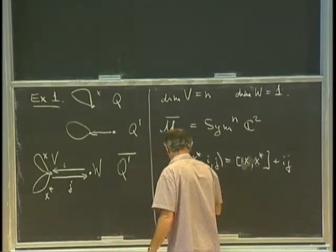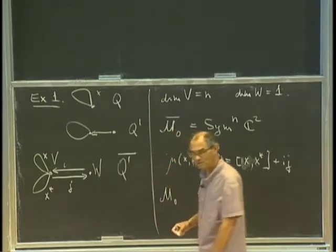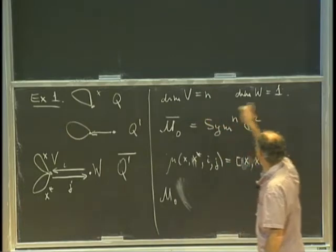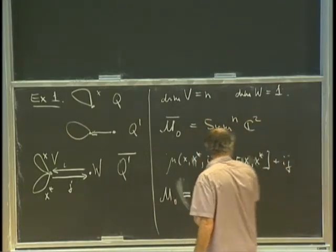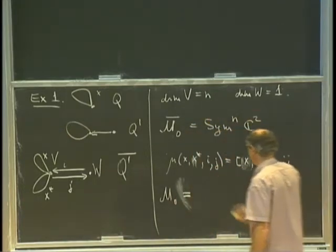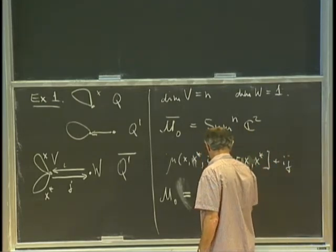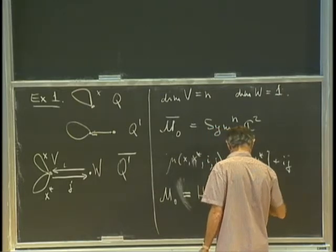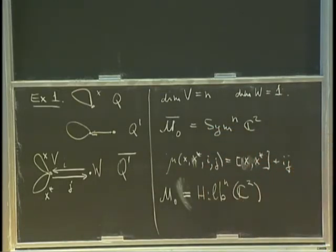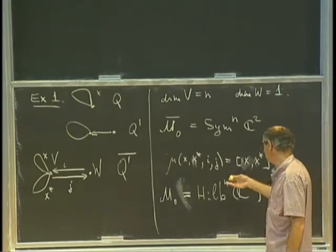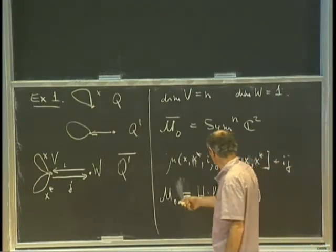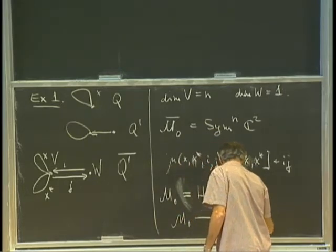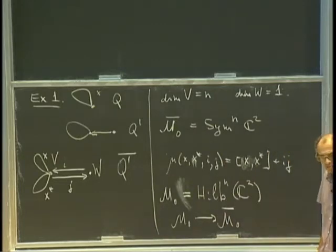If you look at the same thing without a bar — the non-bar variety with the same V and W — then according to this picture it's supposed to be smooth. This is the Hilbert scheme of n points on C². The morphism from M naught to M bar is a classical thing called the Hilbert-Chow morphism.